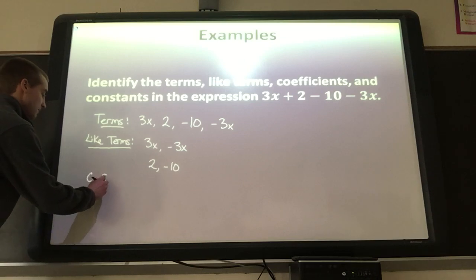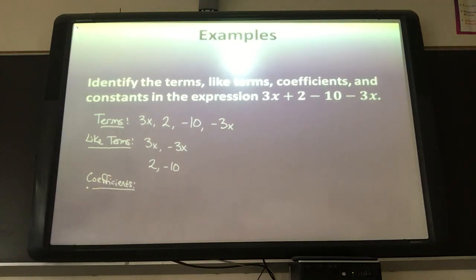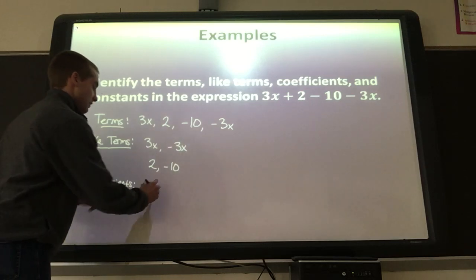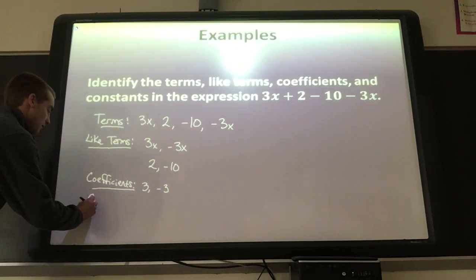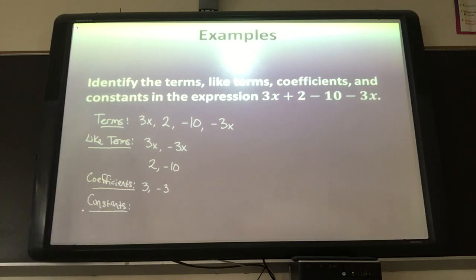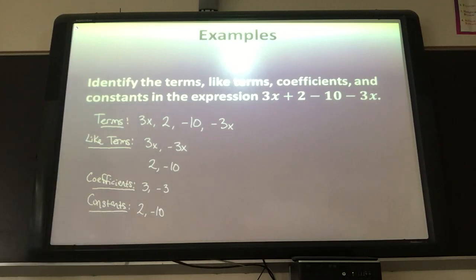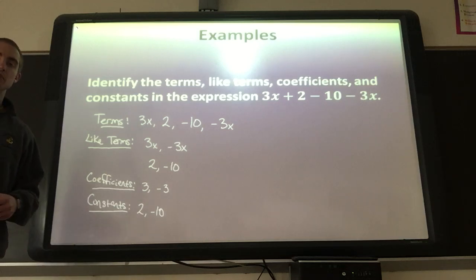Now the coefficients — those are the numbers in front of the variables. We've got 3 in front of x and negative 3, so those are our two coefficients. And the constants are the terms without variables: 2 and negative 10. One thing you can use to check: if you have more than one constant, those would all be like terms.